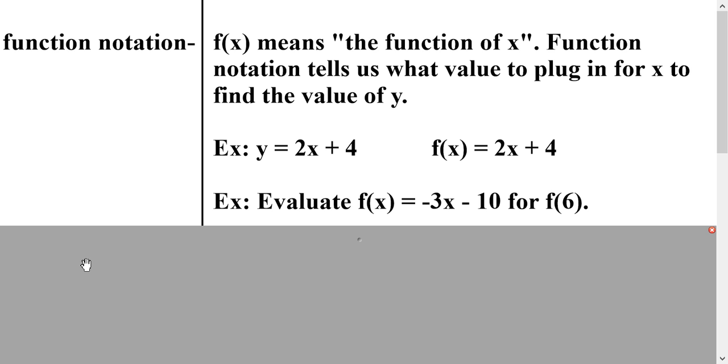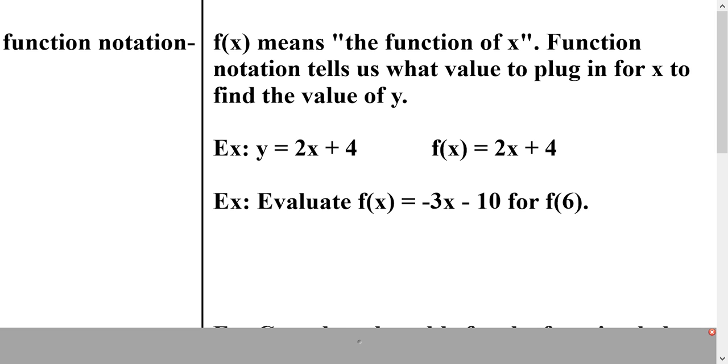So they want us to evaluate f(x) = -3x - 10 for f(6). So what we have to do is use 6 as the input for our function. So we are going to plug in 6 for x. So f(6) would equal -3 times 6 minus 10. So I just plugged in 6 for x, and now I'm going to work it out.